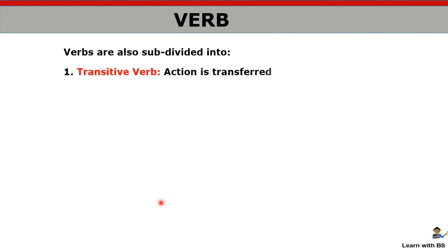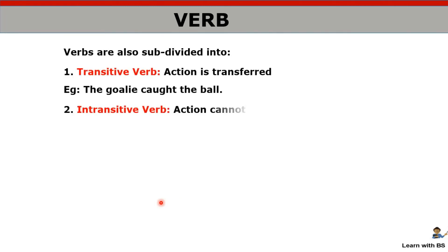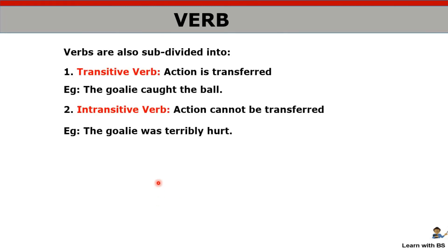Then we have transitive verb and intransitive verb. Transitive verb is when the action is transferred from subject to object. Intransitive verb is when the action does not transfer from subject to object. For more detail on which words are transitive or intransitive, I have made a separate video — if you're interested, you can go to the playlist in English grammar and you will find transitive and intransitive verbs.